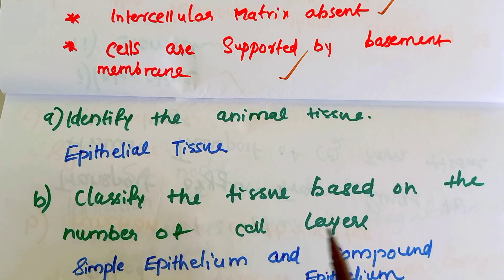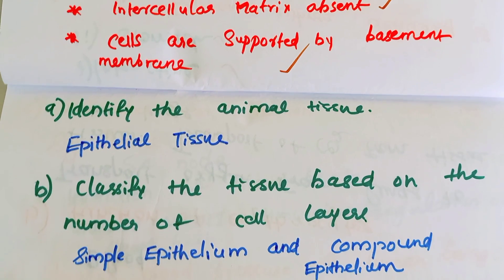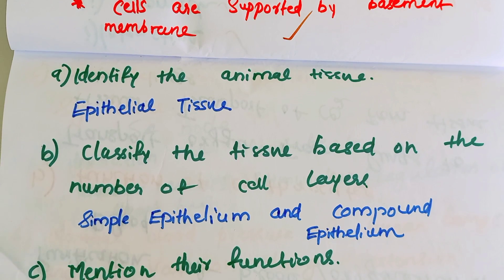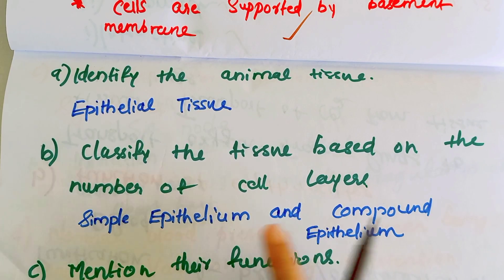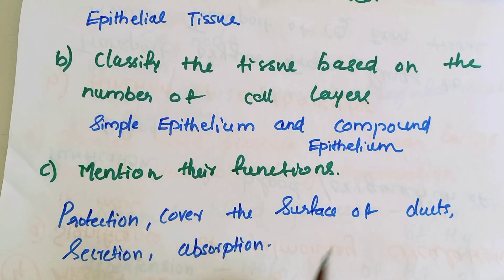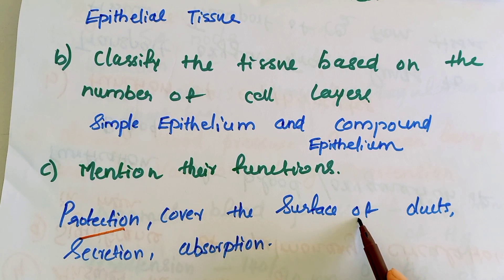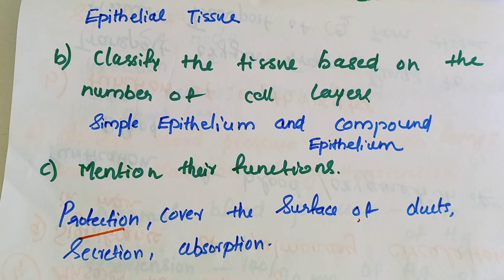Classify epithelial tissue based on the number of cell layers. Epithelial tissue is classified into two types: Simple Epithelium and Compound Epithelium. The functions of epithelial tissue include protection, covering the surface of ducts, secretion, and absorption.